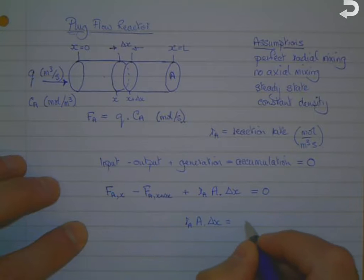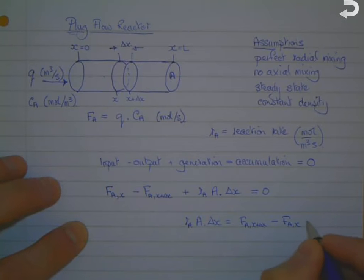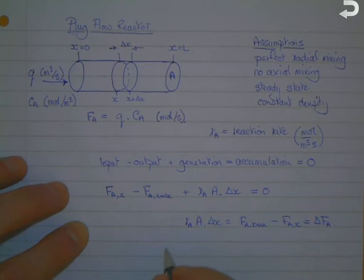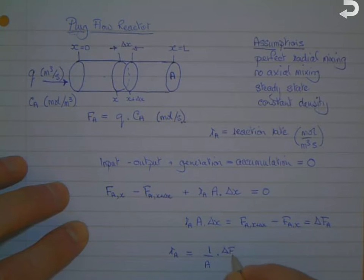So I can just rearrange that slightly. We'll see that Ra times A times delta x is equal to Fa at x plus delta x minus Fa at x, and we can rewrite that as just delta Fa. Then we can divide by delta x and A. We say then that Ra is equal to 1 over A, the cross-sectional area, multiplied by delta Fa over delta x.